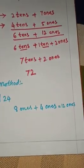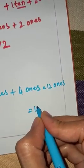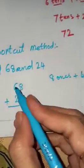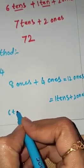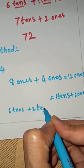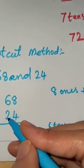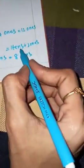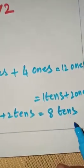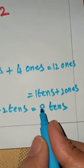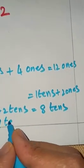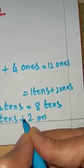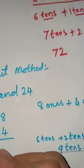12 ones can also be written as 1 ten plus 2 ones. Next, 6 tens plus 2 tens equals 8 tens. Now we have to add this tens number: 1 plus 8 is 9. 9 tens plus 2 ones — that means 92.